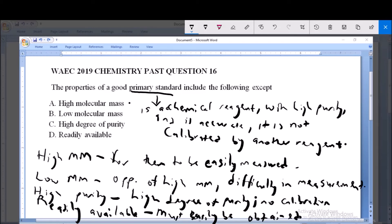Now examples of primary standards include sodium chloride, zinc powder, sodium oxalate which is Na2C2O4, etc.